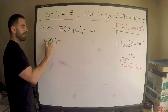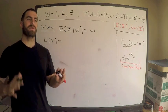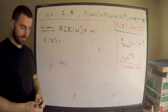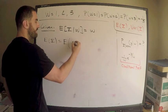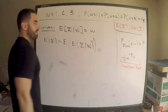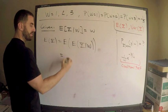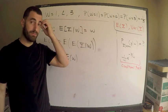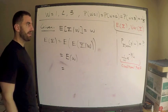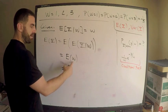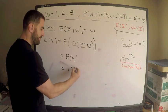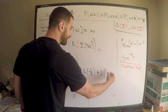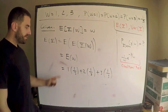So what is E[Y]? This is exactly when you want to use the double expectation formula, because the random variable you're interested in depends on another random variable. So E[Y] equals the expectation of E[Y given W], which is the expectation of W. We can compute E[W] easily since we have the probabilities. For a discrete random variable: each value times its probability, summed up.